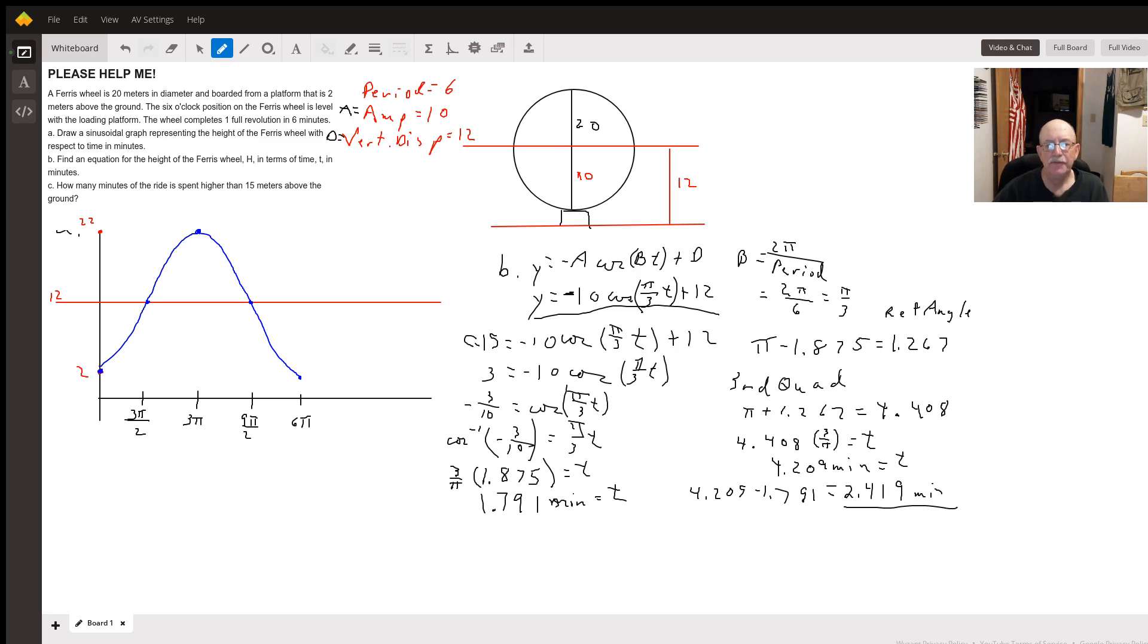Hello, so here's what our Ferris wheel looks like. It's got a diameter of 20 meters. Since the platform's 2 meters above the ground and the radius of the Ferris wheel is 10, that means we're gonna have a vertical displacement of 12 for the center of the Ferris wheel.